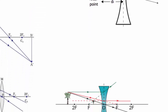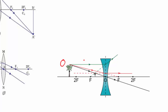Here's another view of the same concave lens situation with a more complicated object. The ray goes parallel, diverges, and you dot it back through F then continue it along. You can also draw a ray through the optical center. Where the dotted-back ray and the optical-center ray intersect gives you the image — same characteristics as before.